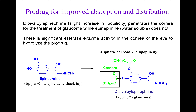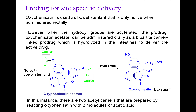A prodrug for improved absorption and distribution: dipivalyl ephedrine penetrates the cornea for the treatment of glaucoma, while ephedrine, which is more water soluble, does not. The approach used here involves conjugating aliphatic carbon chains — alkyl groups — to increase lipophilicity. Now it is lipophilic enough to cross the cornea of the eye, and once inside the eye it can hydrolyze into ephedrine, which is used for glaucoma. This is another way in which you can use a prodrug approach to increase lipophilicity.